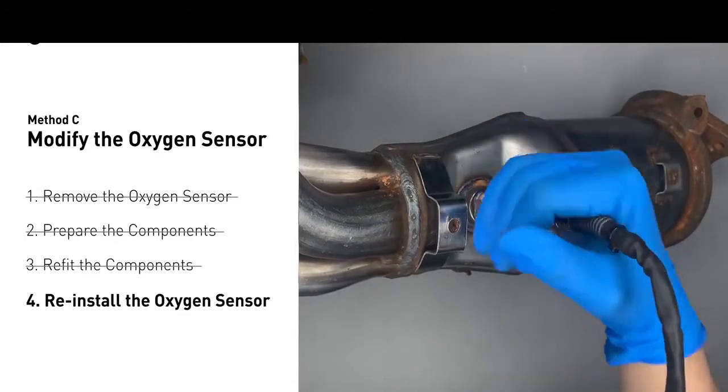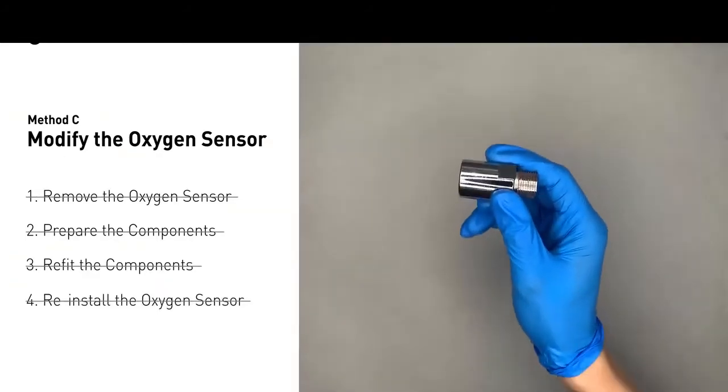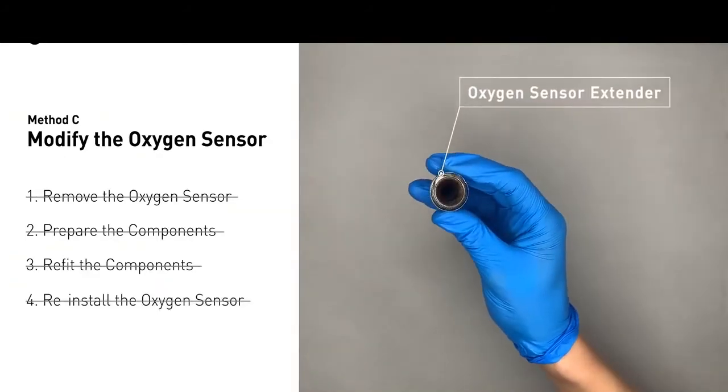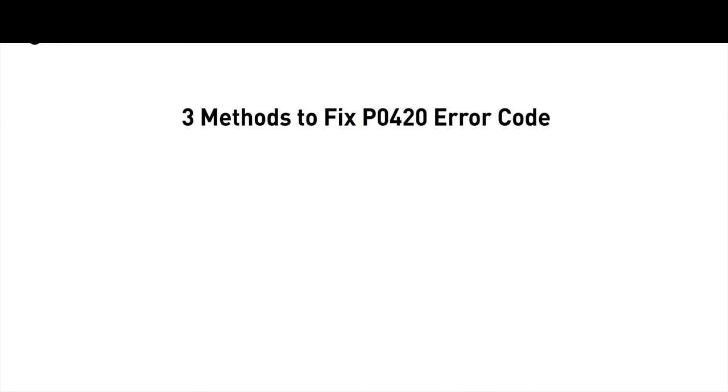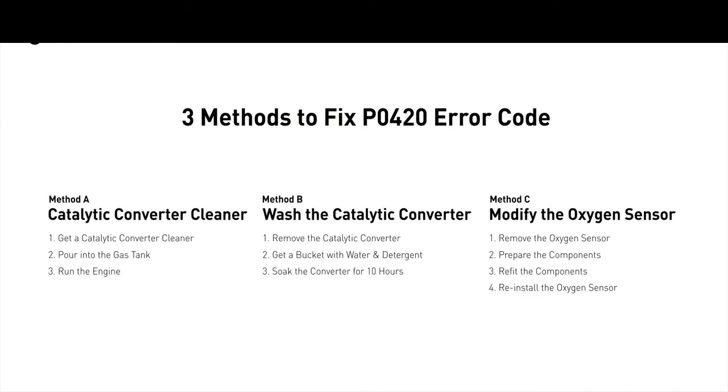If you find refitting the component is too complicated, you can also get some parts like an oxygen sensor extender or oxygen sensor socket to create that space. So here are three of the most practical solutions to fix the P0420 error code.